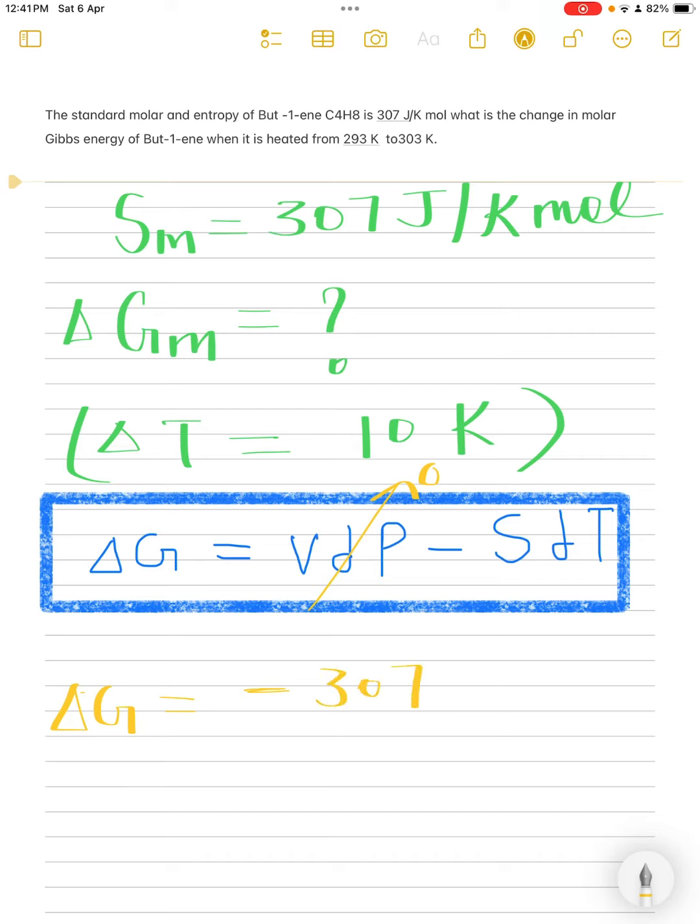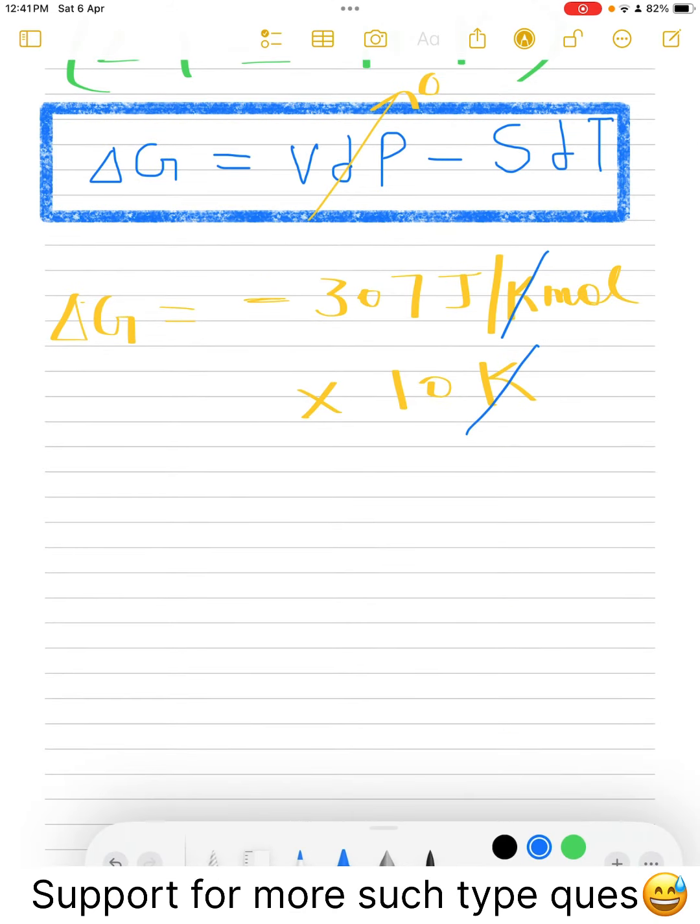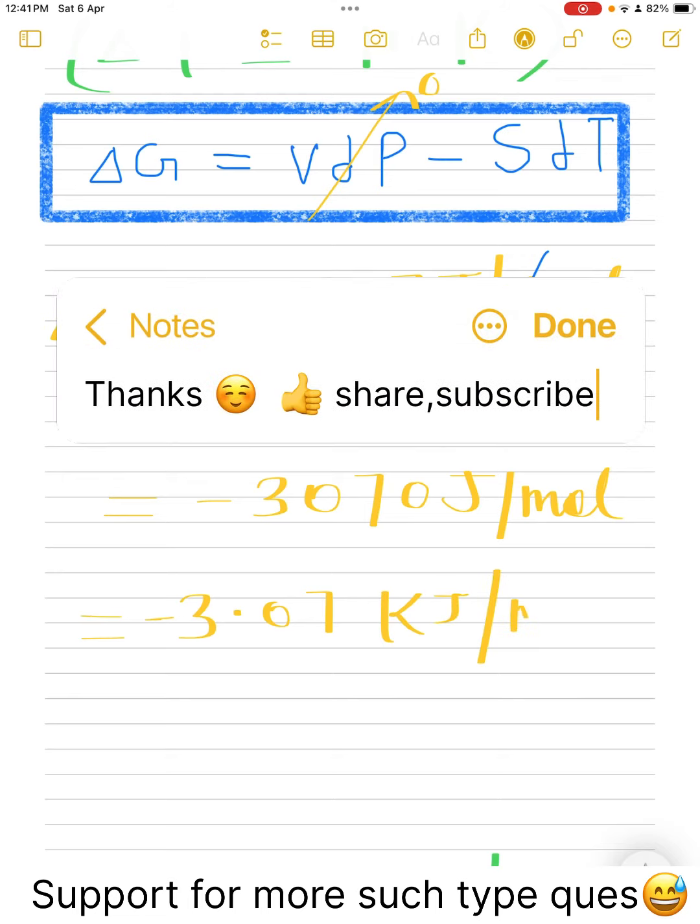By putting the value minus 307 joules per Kelvin mole into 10 Kelvin, you can cancel out the Kelvin by Kelvin and we have the value minus 3070 joules per mole, and you can write it minus 3.07 kilojoules per mole. Thank you.